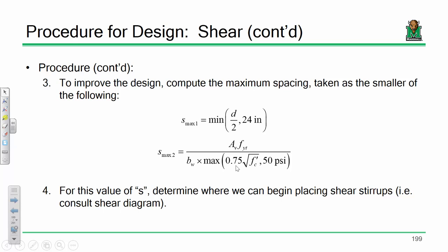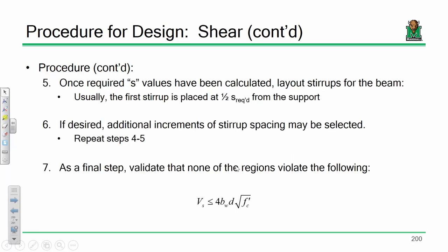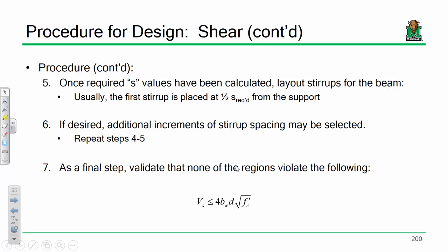Once we determine S-max — if we're only going to use two stirrup spacings, S-required and S-max — we go back to our shear diagram to figure out where we can begin placing stirrups, basically solving for X. Our first stirrup is usually placed a half stirrup spacing or two inches from the support. Two inches is very common and is what we'll use to keep things simple. As a final step, you'll need a check, but this check is usually never violated for the loads and parameters we're discussing.